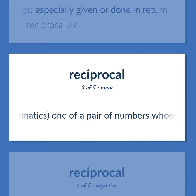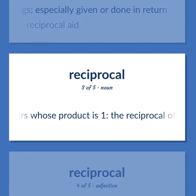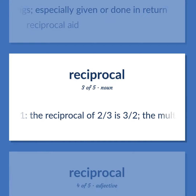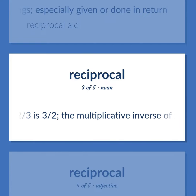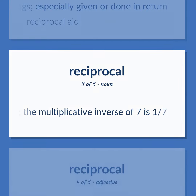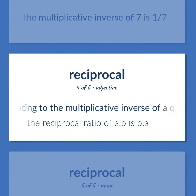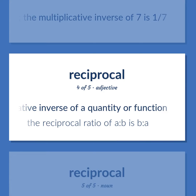Mathematics: one of a pair of numbers whose product is one. The reciprocal of two-thirds is three-halves. The multiplicative inverse of seven is one-seventh. Of or relating to the multiplicative inverse of a quantity or function. The reciprocal ratio of a to b is b to a.